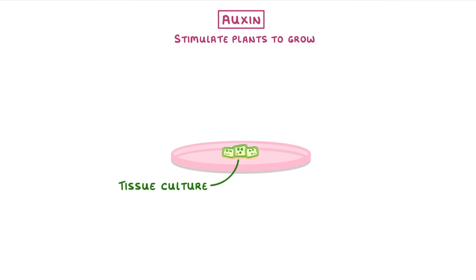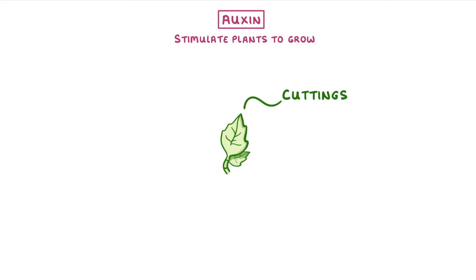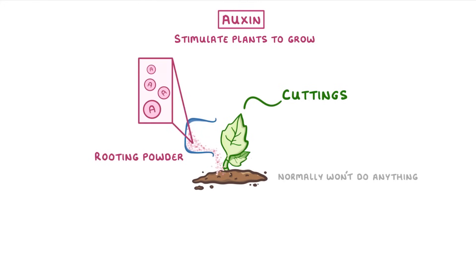If we purposely add auxins to plant cells we can stimulate growth. For example, if we had a collection of plant cells in a tissue culture, we could grow lots of plant clones by using a growth medium that contains auxin, in addition to the other nutrients that the plants would need. The same process works with cuttings, which are small sections of a plant being cut off, like the end of a branch with a few leaves. If we place these in soil by themselves they normally won't do anything, but if we add a rooting powder which contains auxin, then they'll produce roots and start to grow into a new plant.